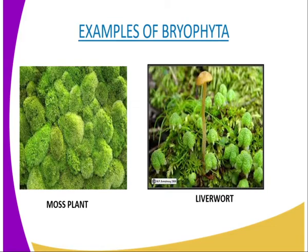Fertilization depends on the availability of water. The bryophytes cannot fertilize if there is no water, so for fertilization to take place, water must be available. Most of these bryophytes you can find mostly near rivers. The last characteristic is that they are terrestrial, growing on damp substratum — for example, you can get them on rocks, walls, and places where there is water around.